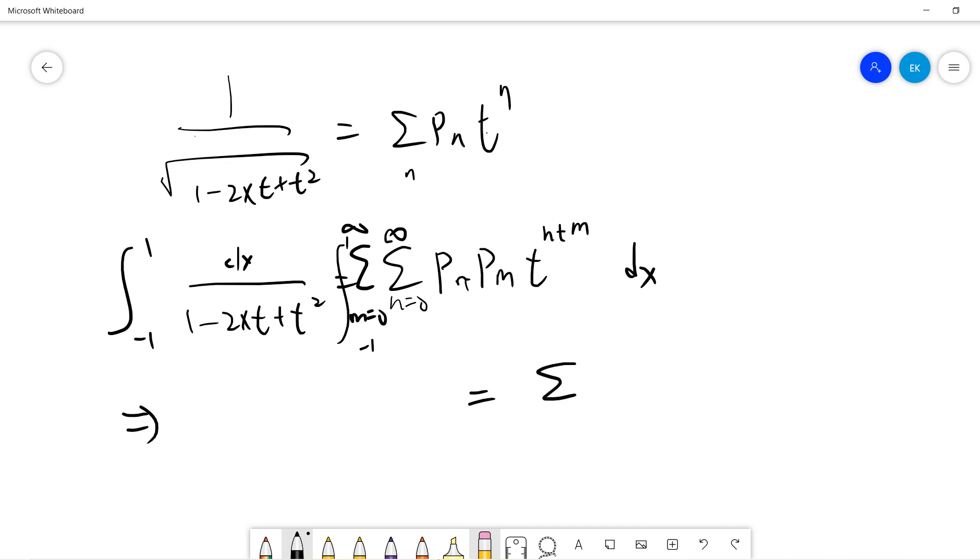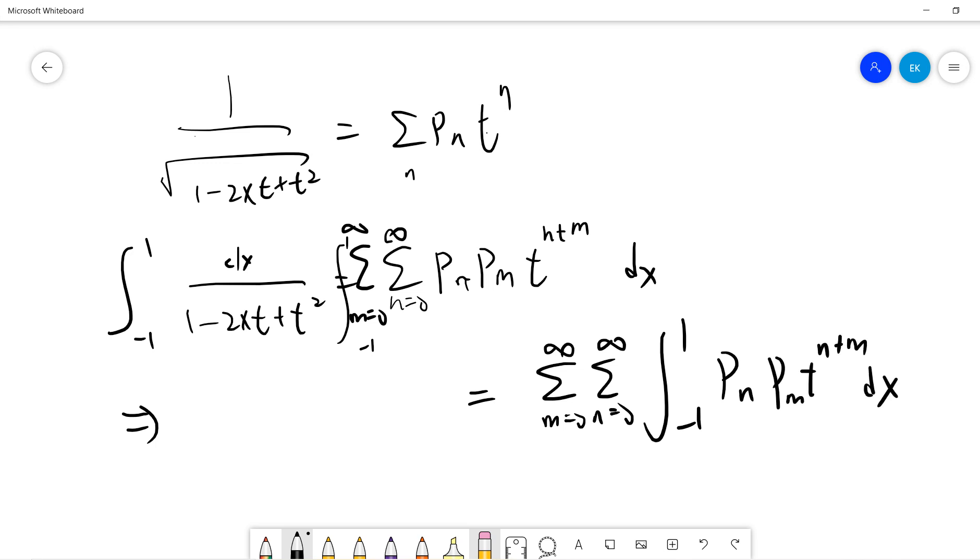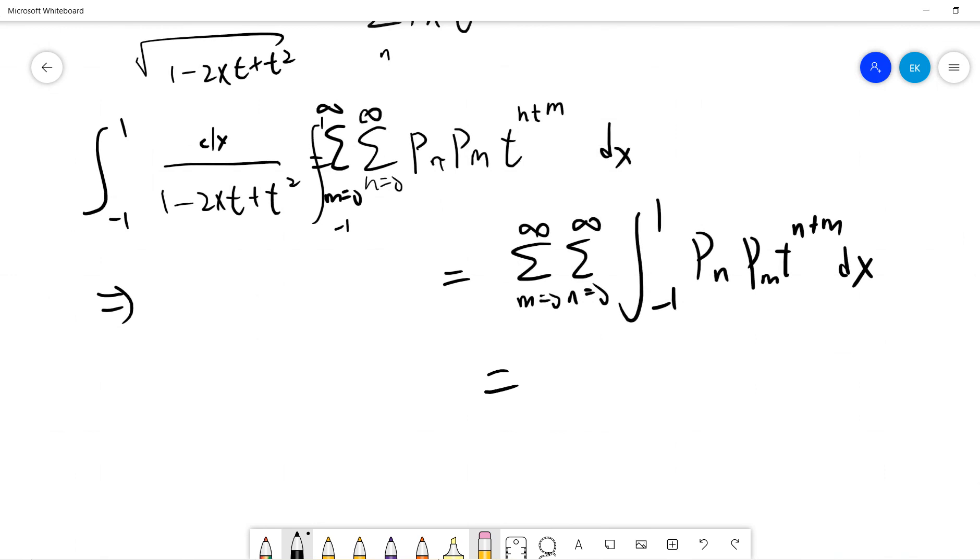So by the orthogonality, then we know that these terms only survive when m is equal to n, so we have Pn squared and t to the power 2n dx. So this is the constant we are hoping to...